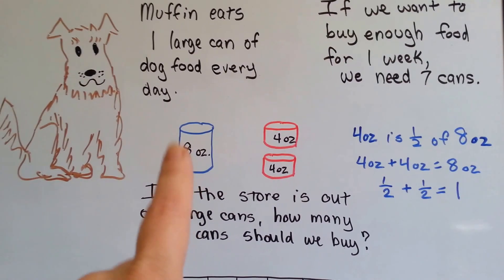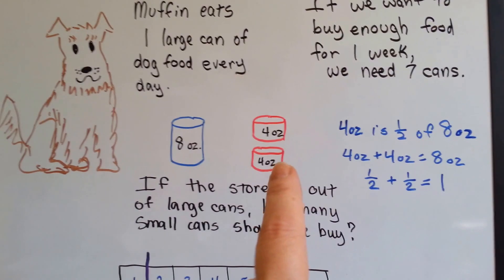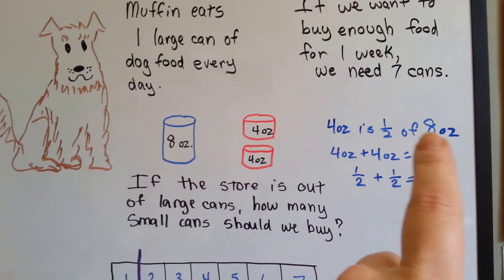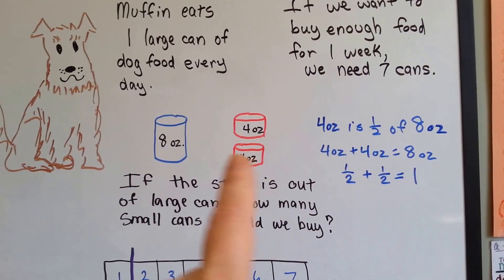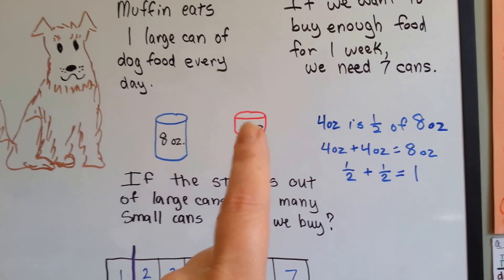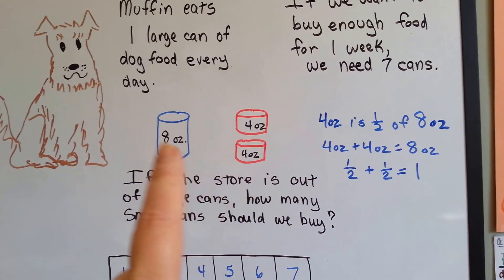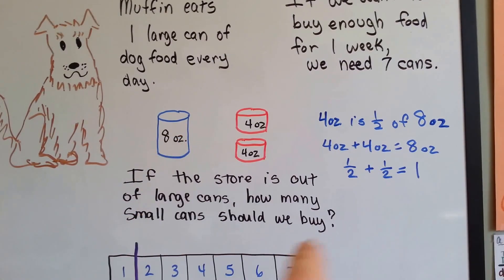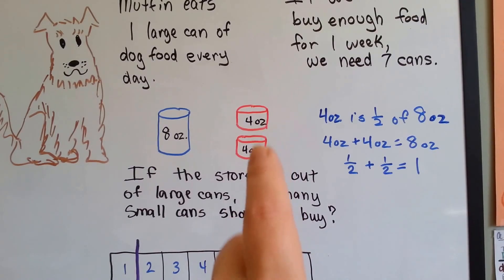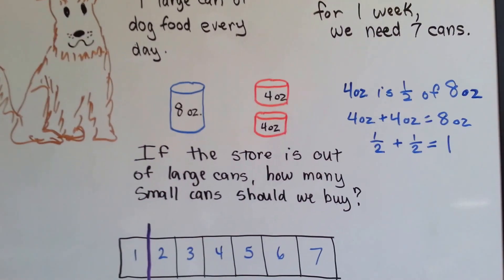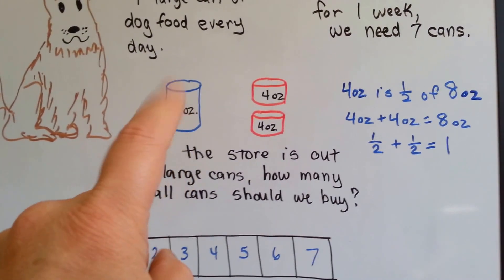If she eats one of these a day and they only have small cans, this is eight, this is four, and this is four, four ounces is half of eight ounces. Four plus four is eight. Four ounces plus four ounces is eight ounces. So if they're only selling these cans, we're going to need to get two of them to feed her every day because they don't have these. A half plus a half is equal to one whole. Two of these half cans is equal to a whole can.